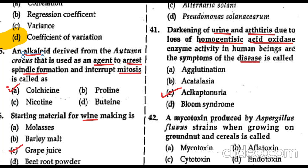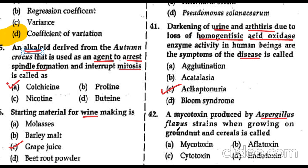Question 42: a mycotoxin produced by Aspergillus flavus strains when growing on groundnut and cereals is called aflatoxin.